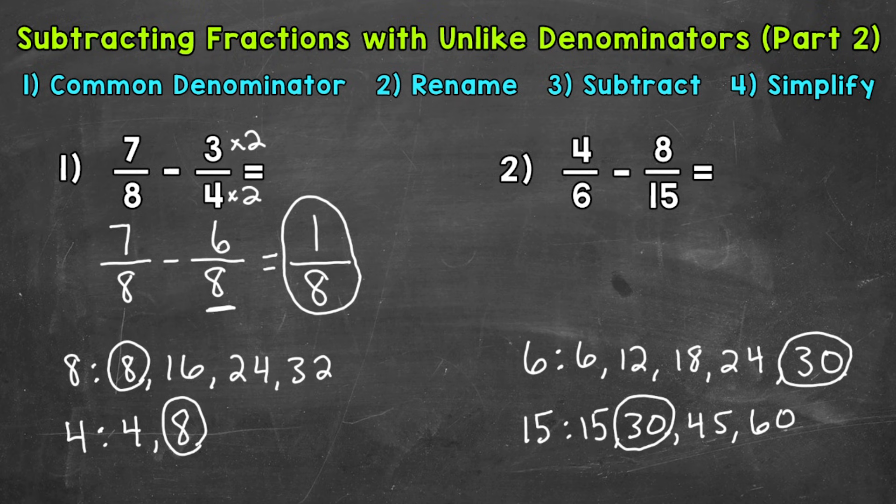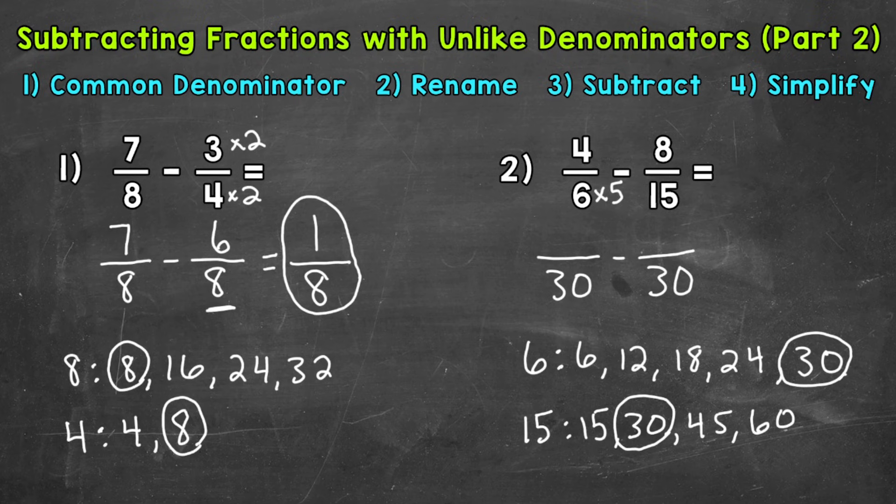Let's go back up to the original problem and rename these fractions with that denominator of 30. So let's do 4/6 first. So how do we get 6 to equal 30? Well, we know 6 times 5 gives us that denominator of 30. So we need to do the same thing to the numerator in order to have an equivalent fraction. So multiply 4 by 5 as well. So 4 times 5 is 20. So 20/30 is equivalent to 4/6. And we now have that denominator of 30.